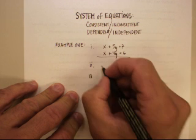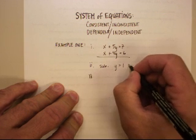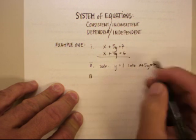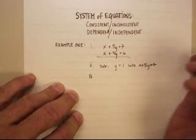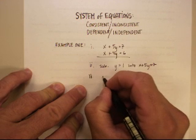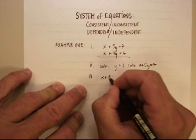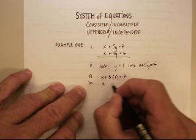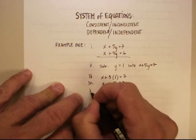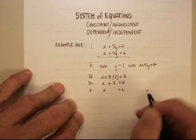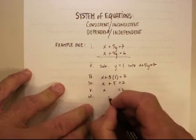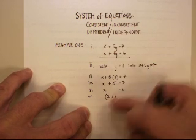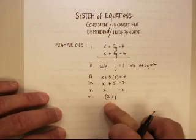So my third step, I'm going to substitute y equals 1 into x plus 5y equals 7. I don't have to choose the top one, I could choose the bottom one, it doesn't really make any difference. You get x plus 5 times 1 equals 7. x plus 5 is 7. x equals 2. So my final answer here is (2,1). These two lines should intersect at the point (2,1).